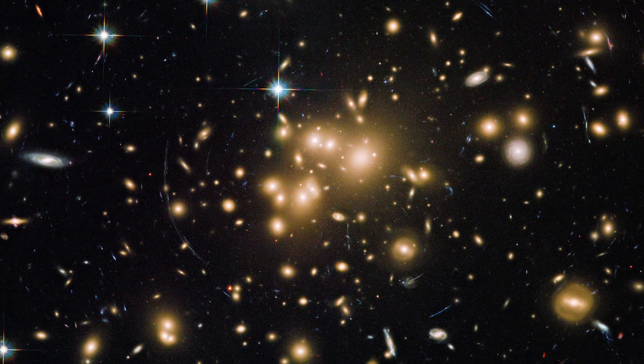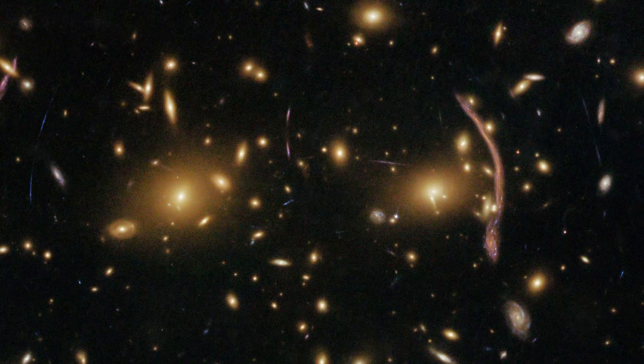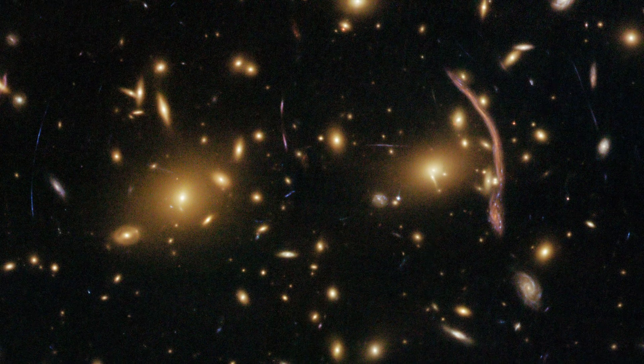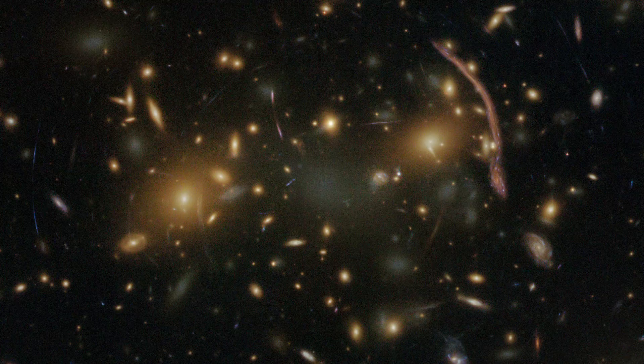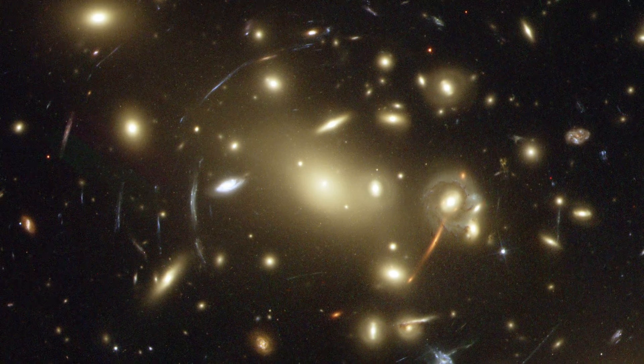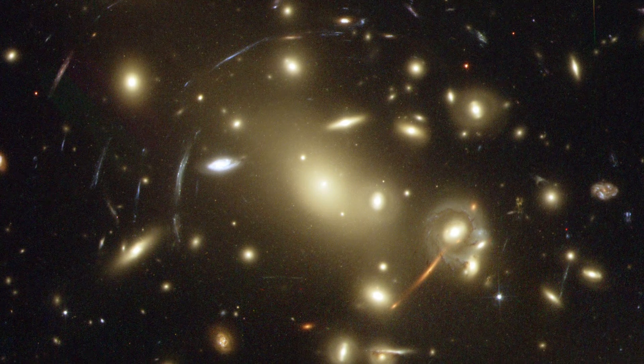These galaxies are so distant that the light Hubble has captured from them was emitted when the universe was just 500 million years old. These distant galaxies, some of the first to form in the universe, offer astronomers a glimpse of the conditions in the early universe.